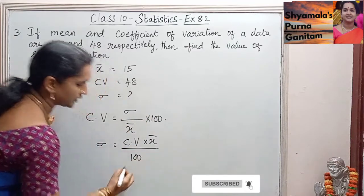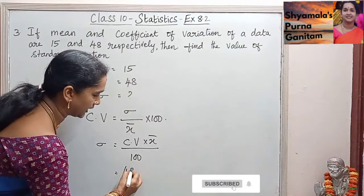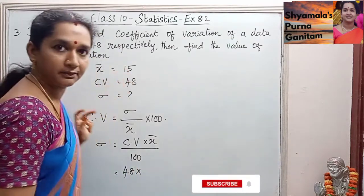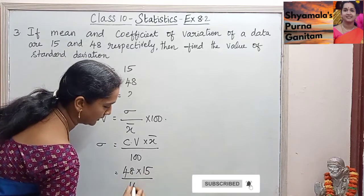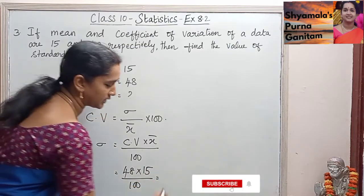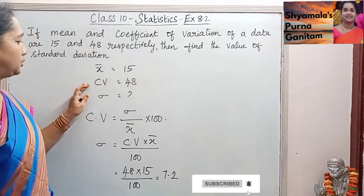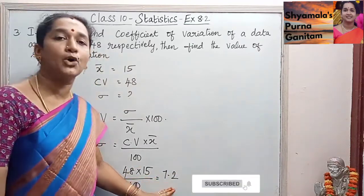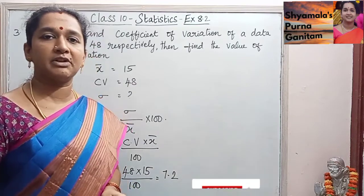So this is equal to coefficient of variation 48, into x̄ which is 15, divided by 100. When we simplify this, we get the answer as 7.2. So 7.2 is the standard deviation for the given information.